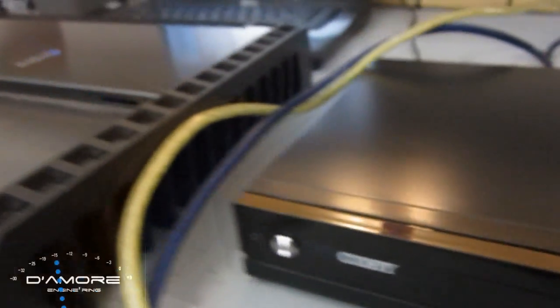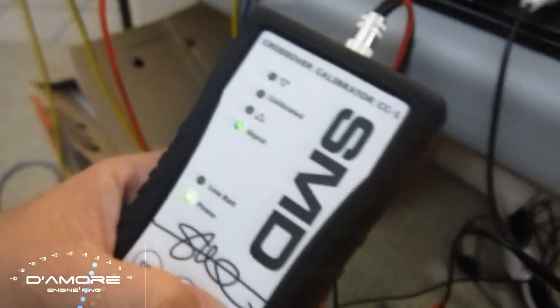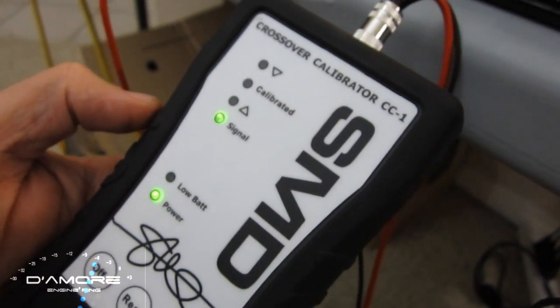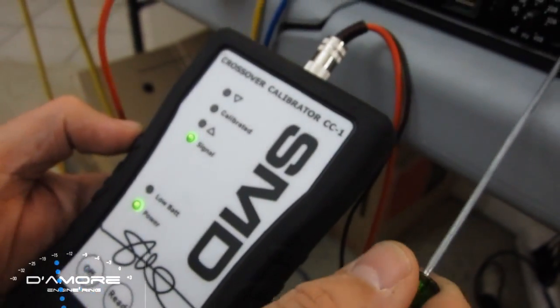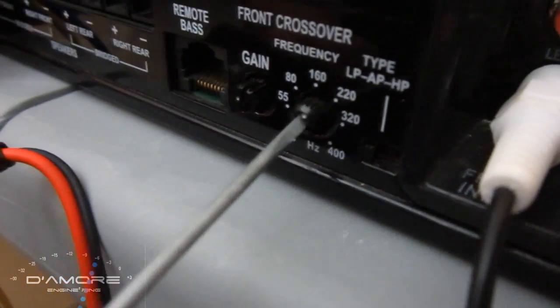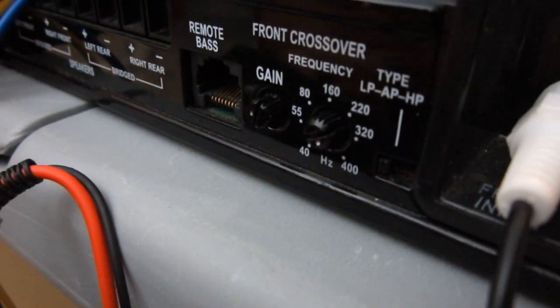Alright, track 14. Turn the CC1 on. And it shows signal. It's already hooked up and connected. So then we move the crossover switch to low pass. And then we start with this knob all the way up for low pass.